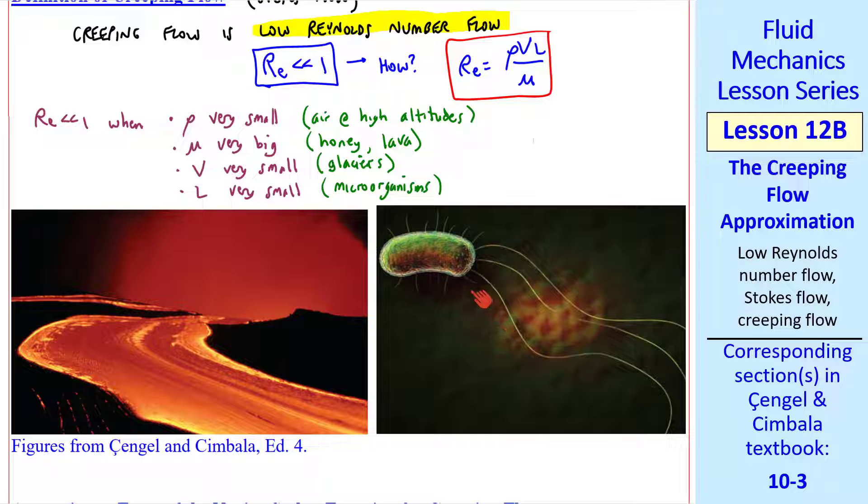The length scale of these organisms is microscopic. And I'll add here any combination of these four can bring about a very small Reynolds number.